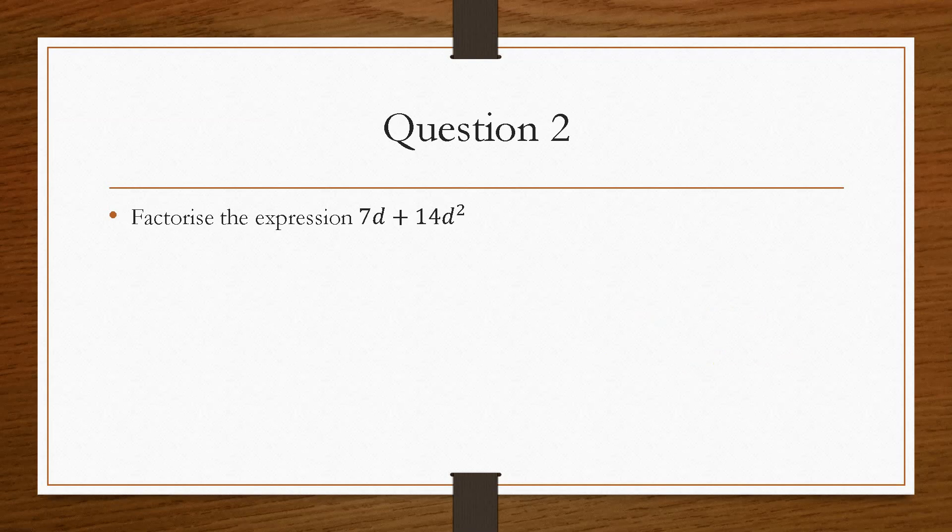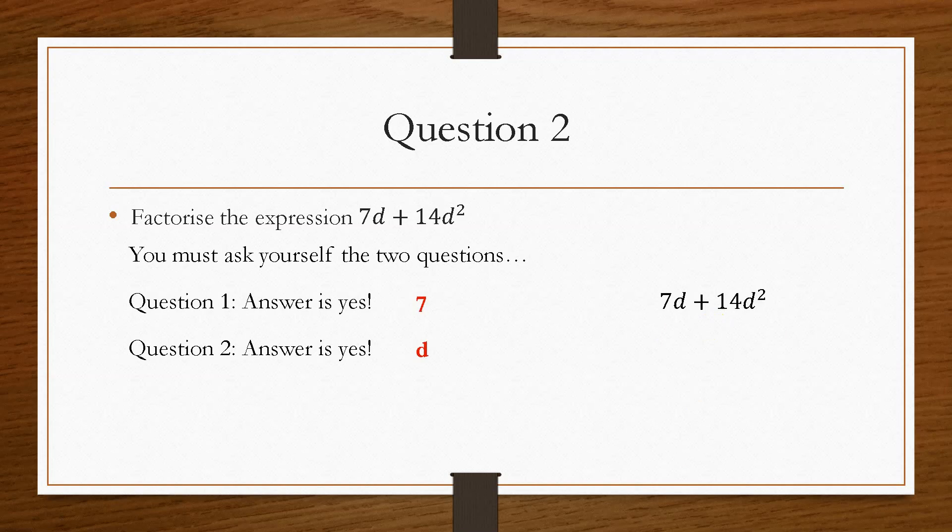The second question is, factorise the expression 7d plus 14d squared. Now again, you must ask yourself the two questions. Does it have any numbers common? Answer is yes. Both of these numbers are divisible by 7. Second question, do they share any letters? Answer is yes. This is d and this is d squared. So the highest power of d is d to the power 1. Because if we took d to the power 2, we can't divide d to the power 1 by d to the power 2. That will give us a negative indices. And there's a link in the description to a video to solve indices. That's the manipulation of powers.